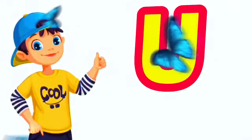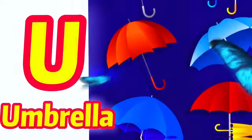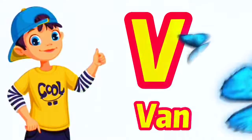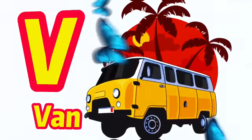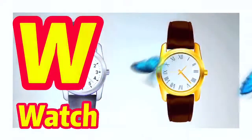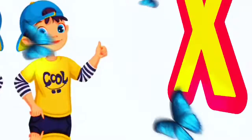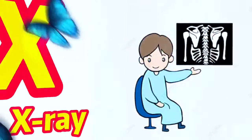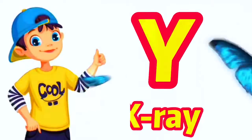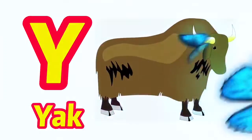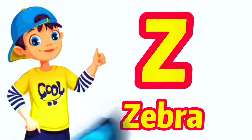U for umbrella, V for violet, W for watch, X for x-ray, Y for yak, Z for zebra.